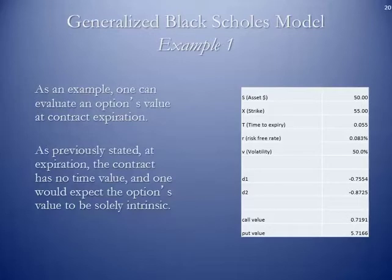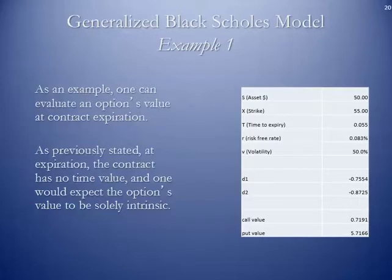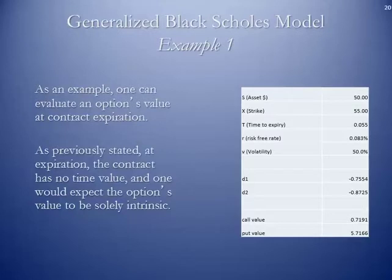D1 and D2 are deltas — do not worry about those. But you can see what the model outputs are: call values and put values. A call value is going to cost you $0.72 to get a $55 call in a $50 market with those other parameters entered. From the put side — remember, the put allows you to sell at a certain price level — if you want to sell at $55 and the market is $50, obviously the intrinsic value is $5, so at a minimum it's going to cost you $5. In this scenario, the extrinsic value is $0.72 as well.